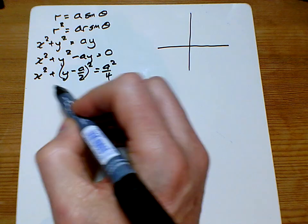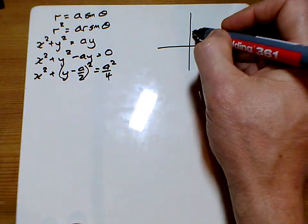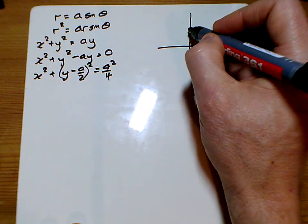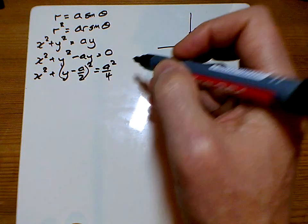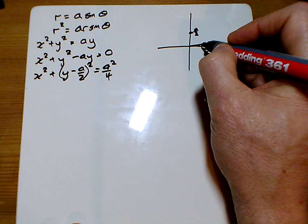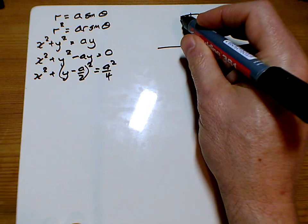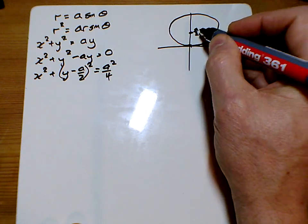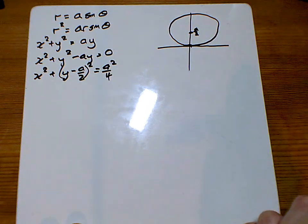Center is X is zero, Y is A over 2. So A over 2 here. And the radius is the square root of this, which is also A over 2, so it's going to sit on the axis there. So we have a circle sitting on the axis, center zero, A over 2.